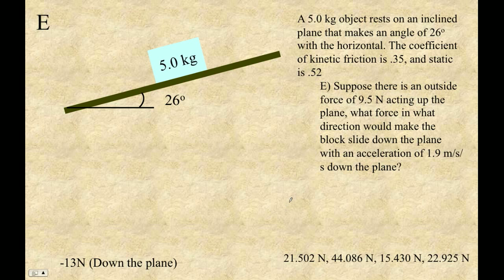All right, finally a problem that's worthy of your talentedness and giftedness. Suppose there is an outside force of 9.5 newtons acting up the plane. What other force, so there's going to be two outside forces, 9.5 newtons up the plane. What other force in what direction would make the block slide down the plane with an acceleration at 1.9 meters per second squared down the plane?